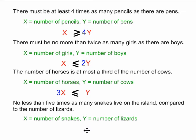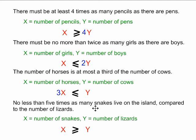The final example says no less than five times as many snakes live on the island compared to the number of lizards. First I write my x and my y. Because I see 'no less than,' that indicates a greater than or equal to sign in between them. Then I see 'five times' — something is being multiplied by five. The number of snakes must be the larger number, if possibly five times as many of them live on the island. We would not multiply the larger number by five to get the smaller; we would multiply the smaller number by five. The number of lizards is the smaller number, the y, so it is what is being multiplied by five.